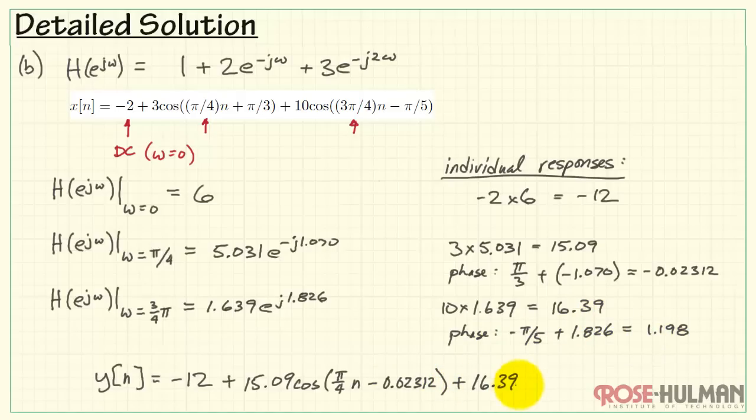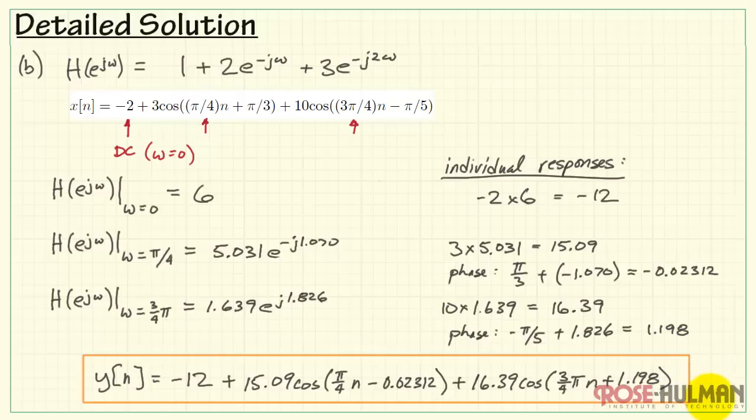And then for the third component, we have a value of 16.39 multiplying cosine of 3 quarters pi times n. And the phase we calculated for the output is this value right here. All right, and that takes care of this problem.